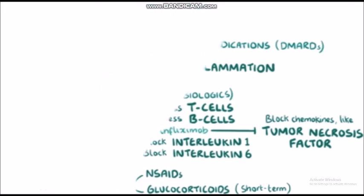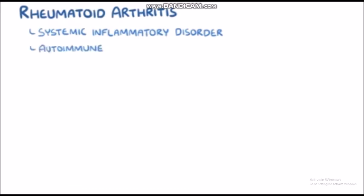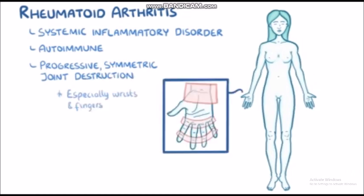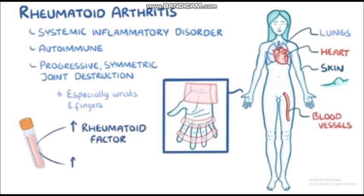As a quick recap, rheumatoid arthritis is a systemic inflammatory disorder of autoimmune origin primarily characterised by progressive symmetric joint destruction, especially in the wrists and fingers, but may also affect other joints and many organs such as the skin, heart, blood vessels, and lungs. It is marked by elevated rheumatoid factor and anti-cyclic citrullinated peptide antibodies.